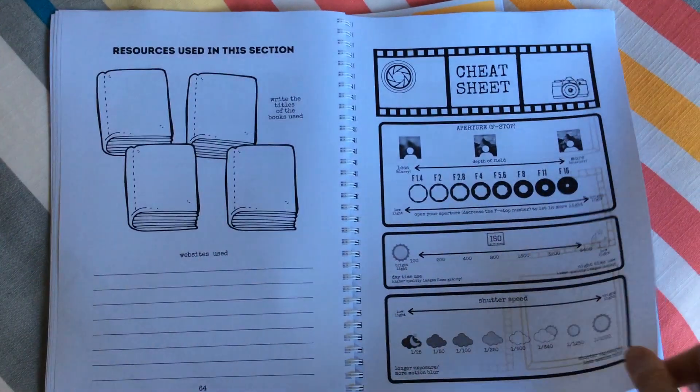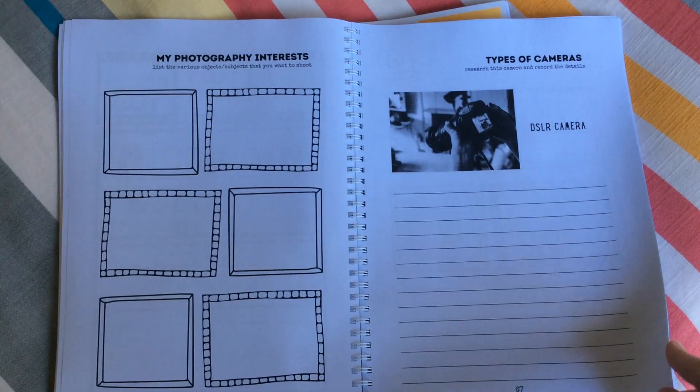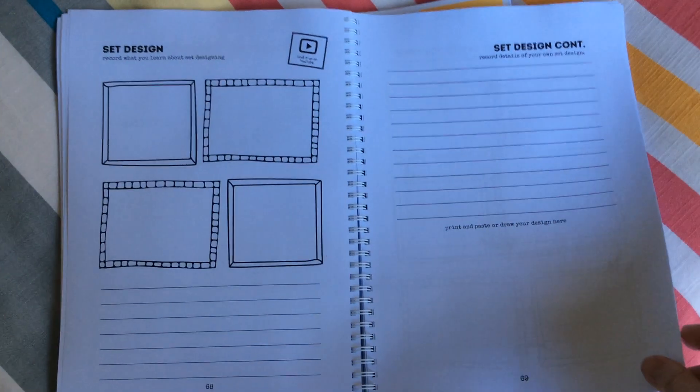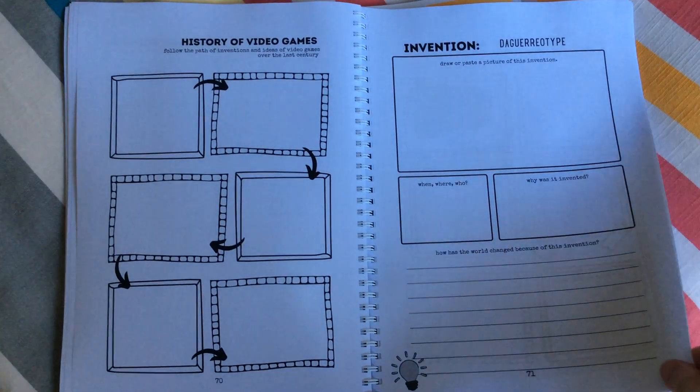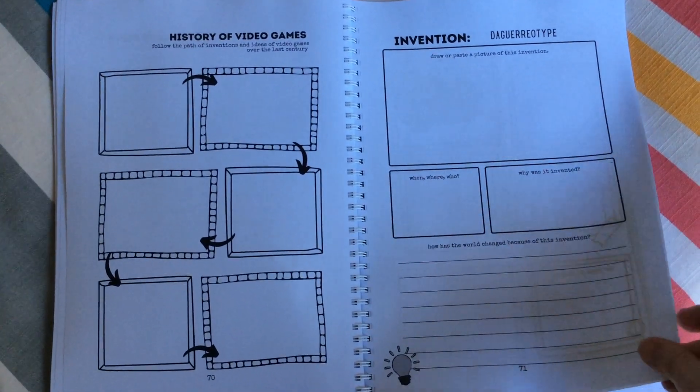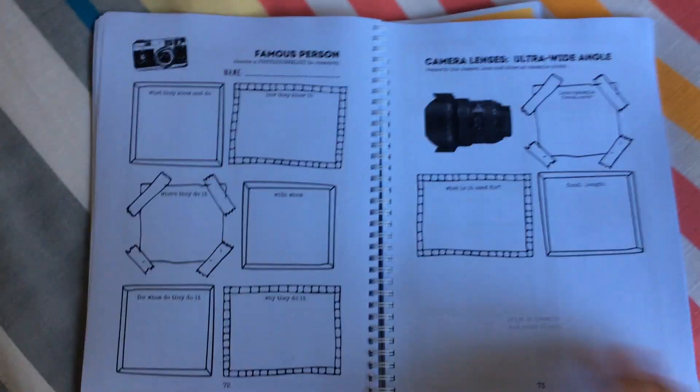So this is everything else. We've got the cheat sheet. All sorts of types of cameras that we cover. The set design. Inventions, so it covers history.